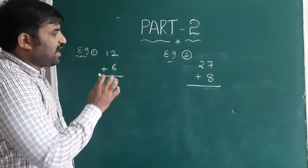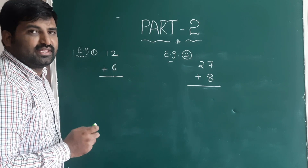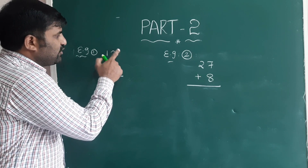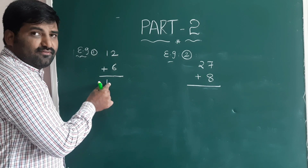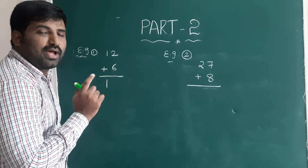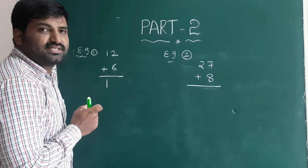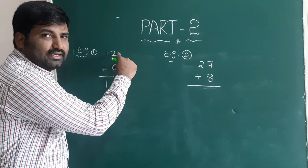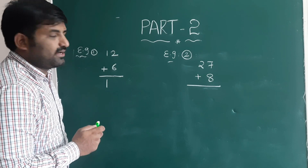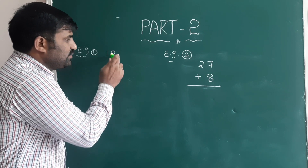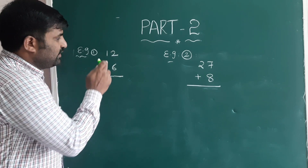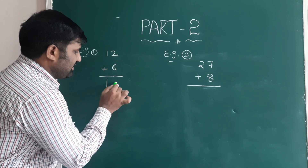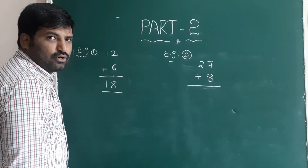Let's see how to add 12 and 6 using Vedic math. I take the tens digit 1 as it is. Since 6 plus 2 gives a non-carrying number — 8 — you can take the tens digit directly as it is. So 1 stays, 2 plus 6 is 8, and the answer is 18.